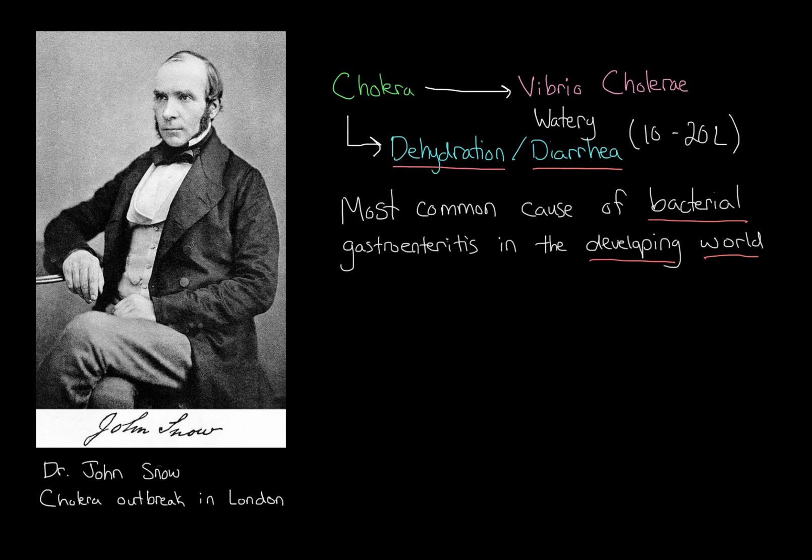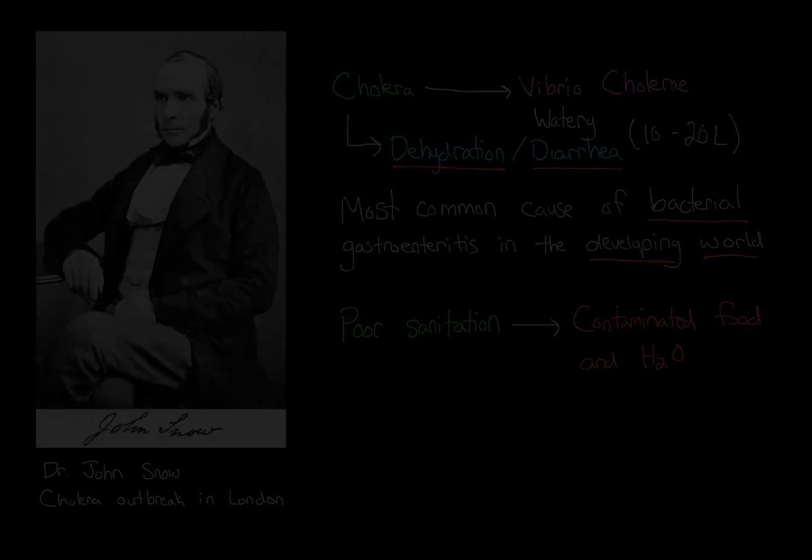Now you're more likely to contract cholera if you live in areas of poor sanitation. And that's because in areas of poor sanitation, the food and water is more likely to be contaminated. If you eat this contaminated food and drink this contaminated water, you're very likely to contract the infection. So once you contract the infection, it first needs to make its way past the acidic environment of the stomach and into your small intestine.